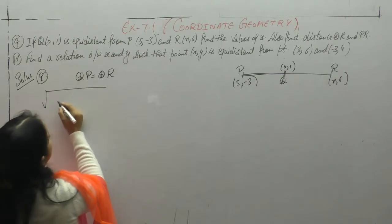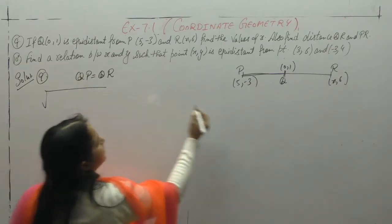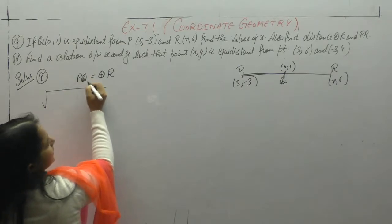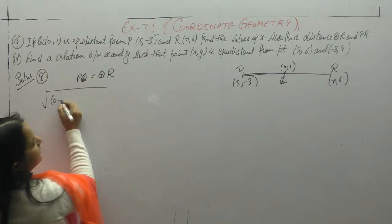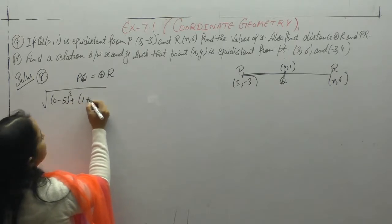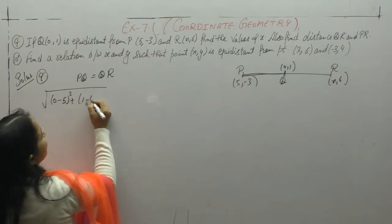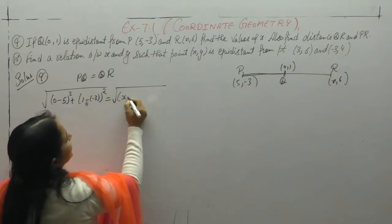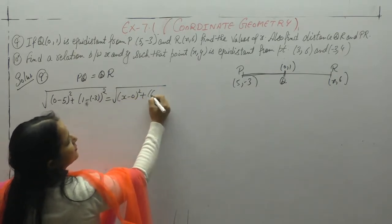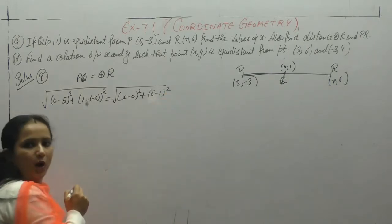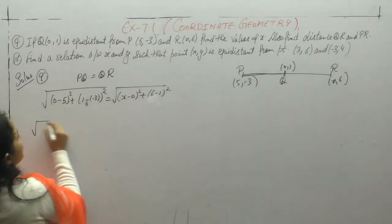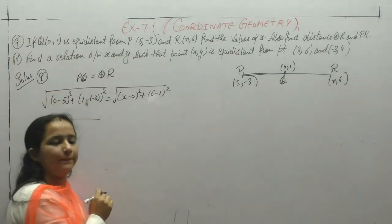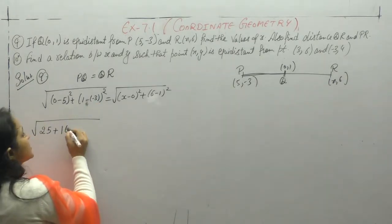QP, or PQ we can say: square root of (x2 minus x1) whole square plus (y2 minus y1) whole square. QR: square root of (x minus 0), (6 minus 1). What we get: minus 5 square, minus minus plus, 1 plus 3 is 4, so 4 square.